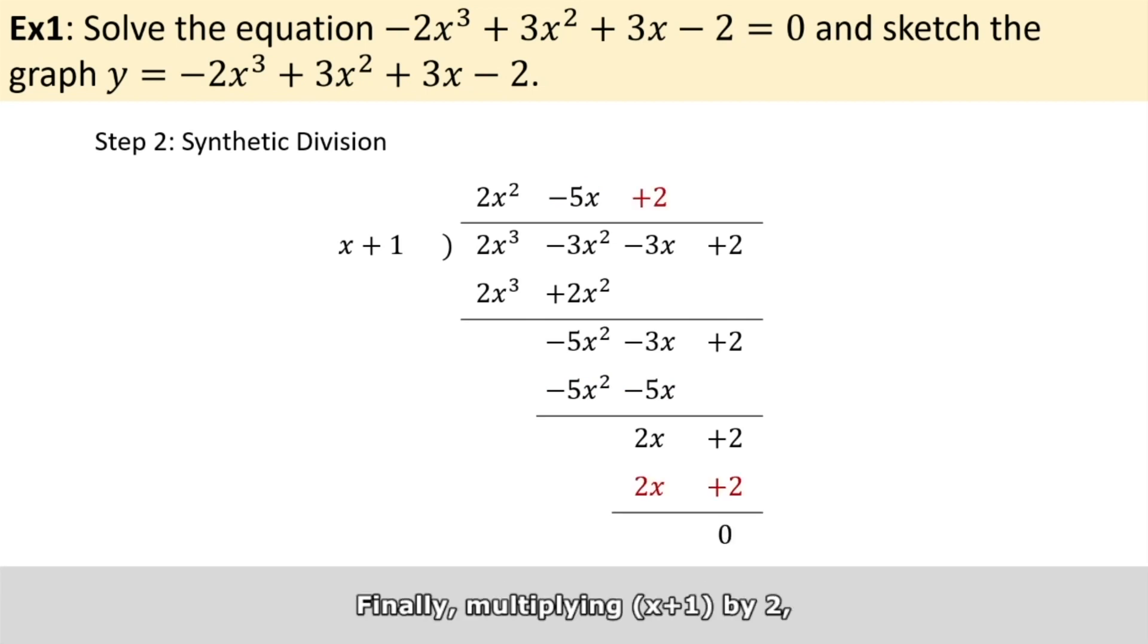Finally, multiplying x plus one by 2 and doing the subtraction again, we end up with zero. This gives us the quadratic equation.